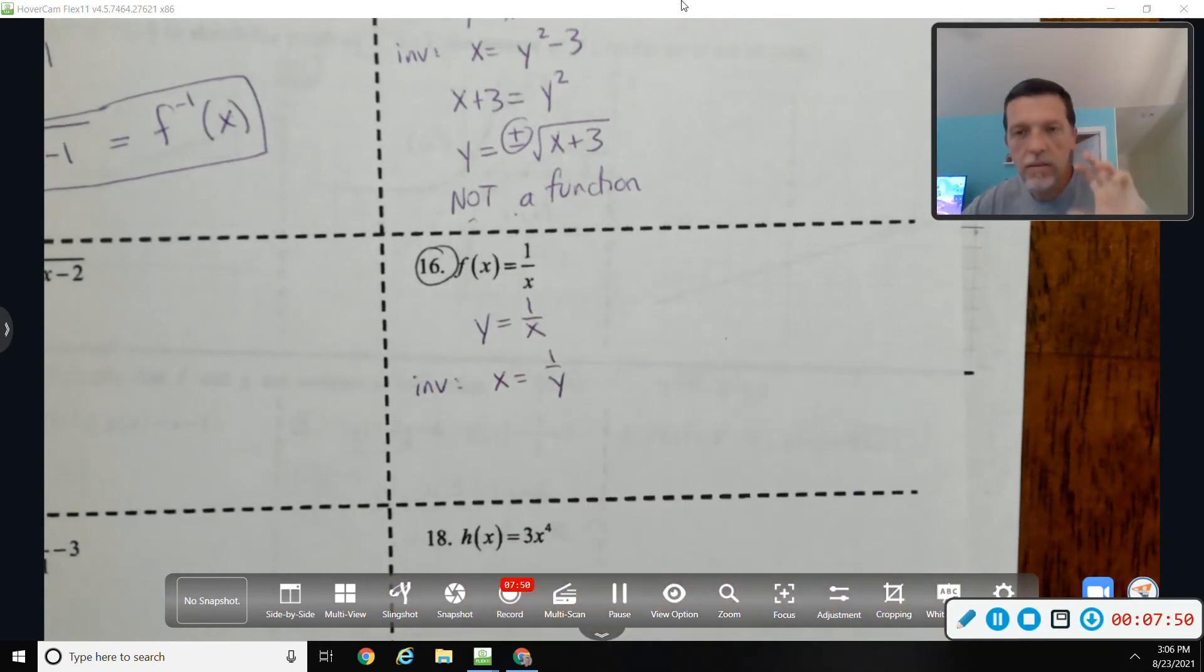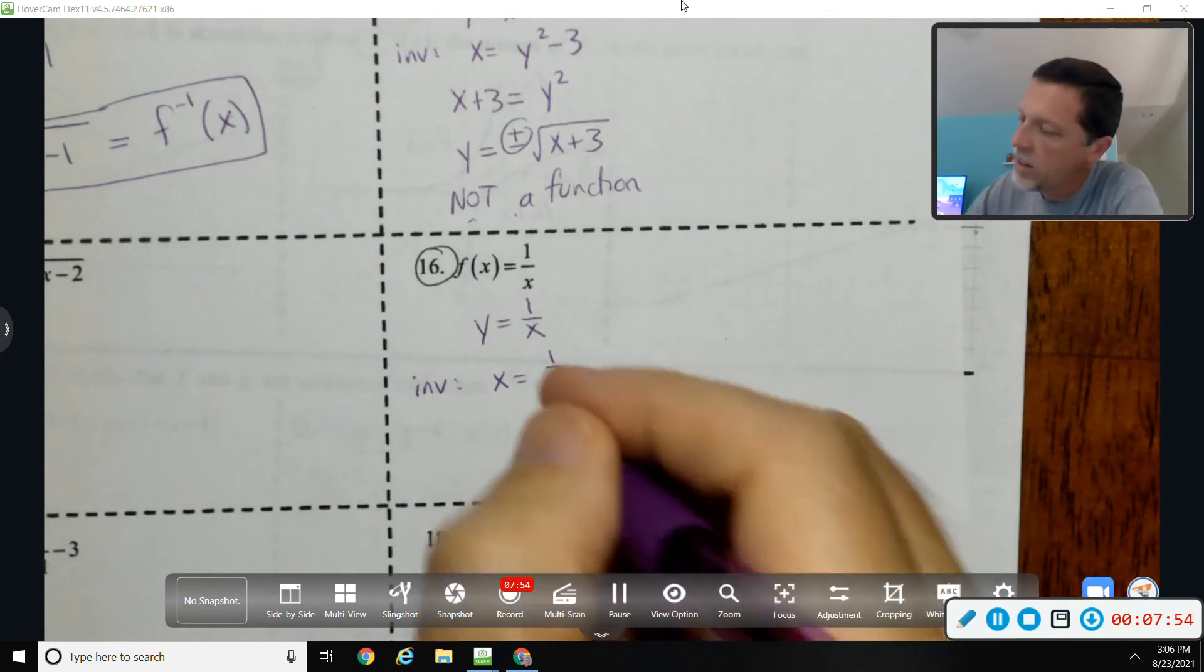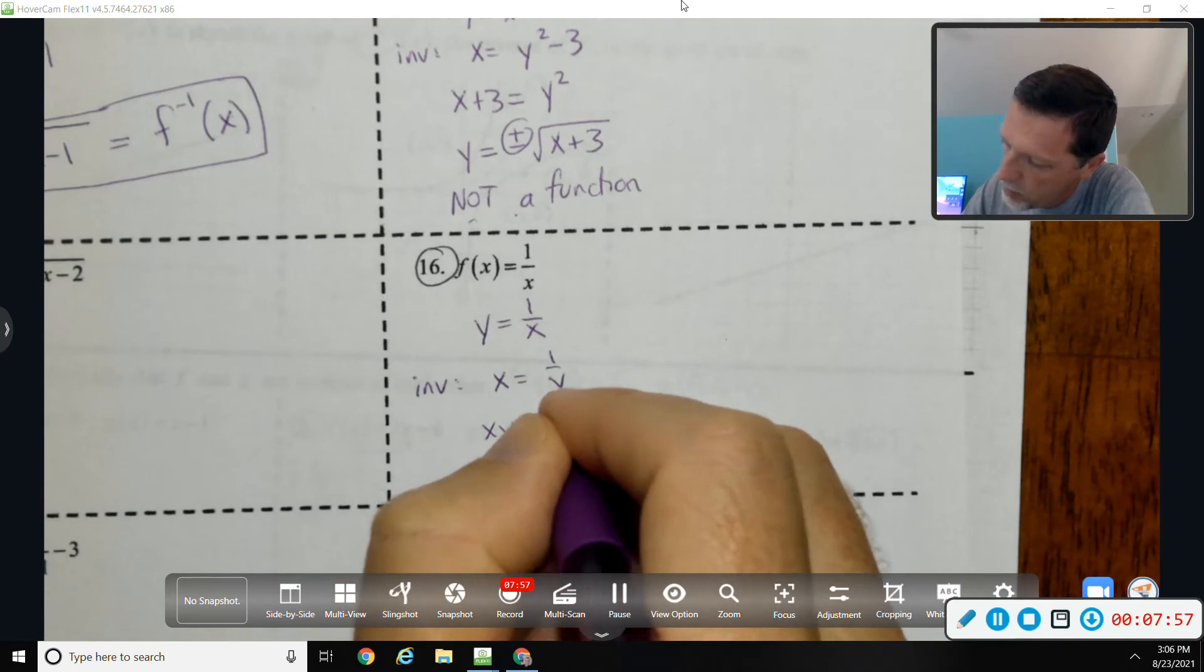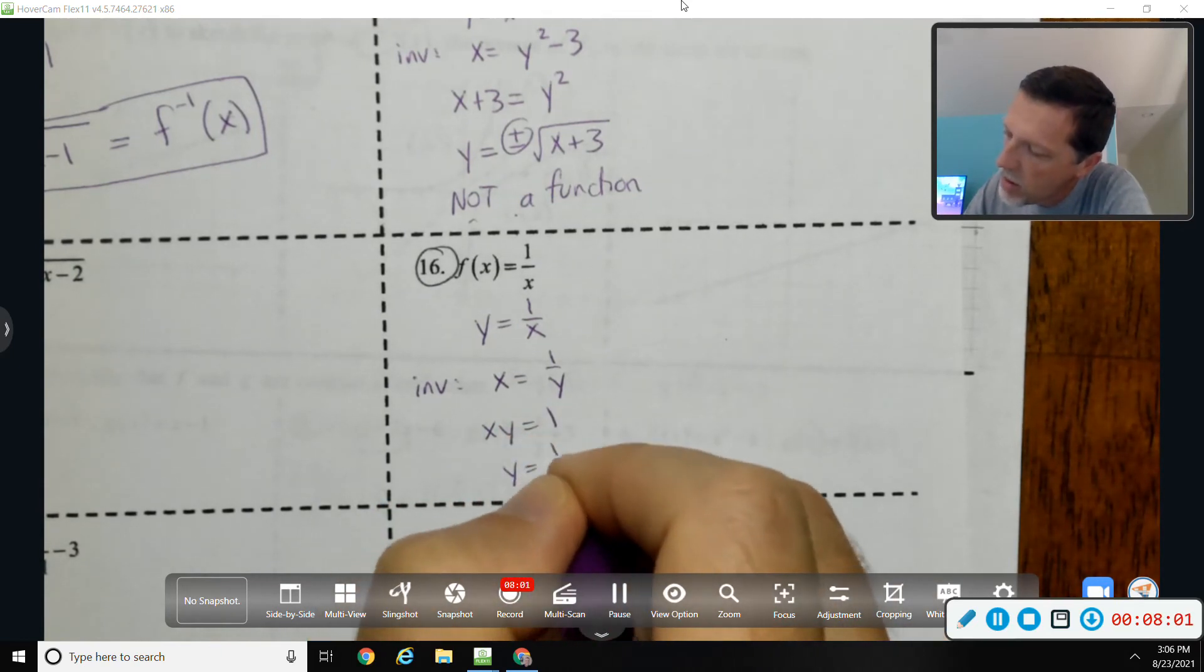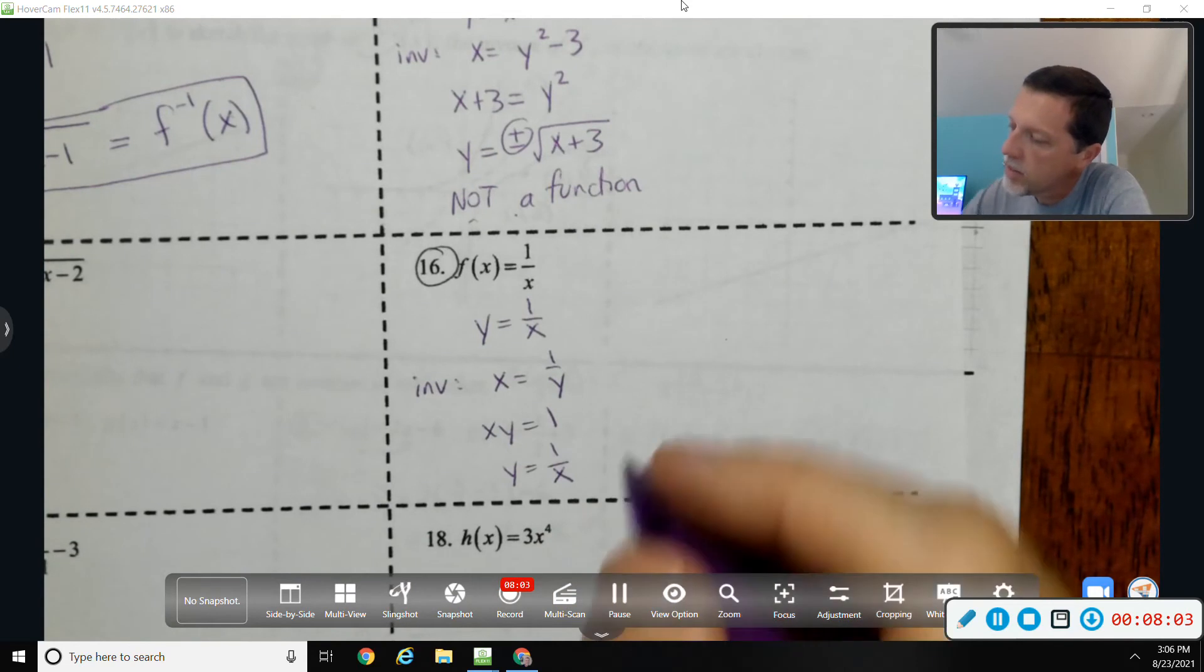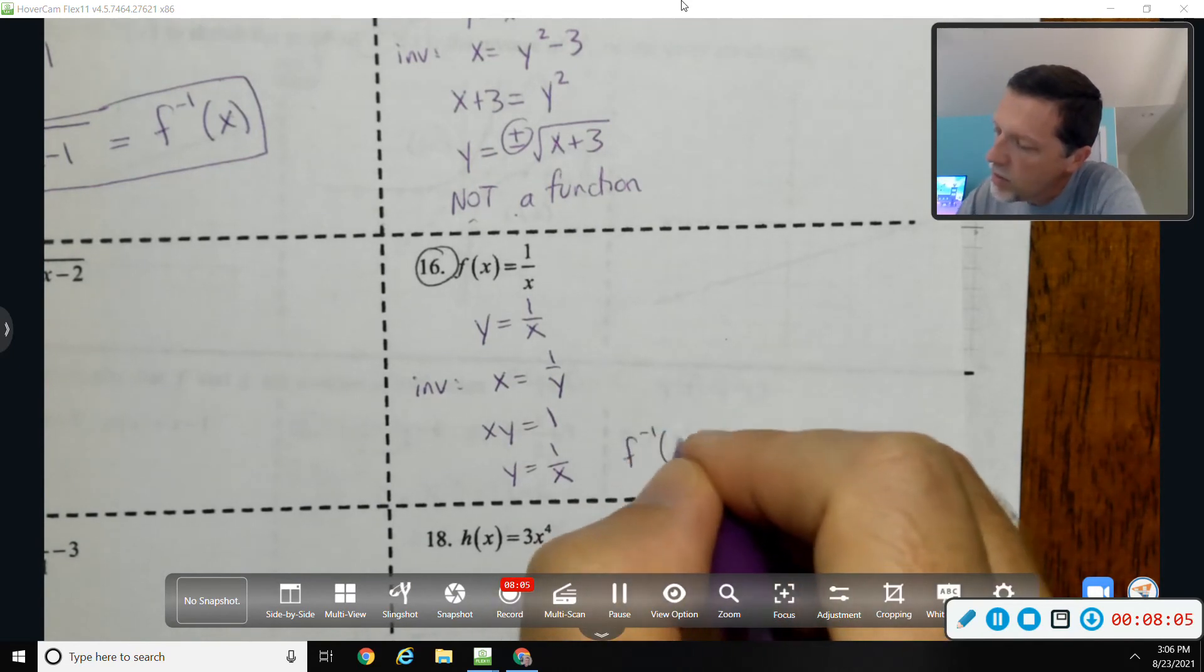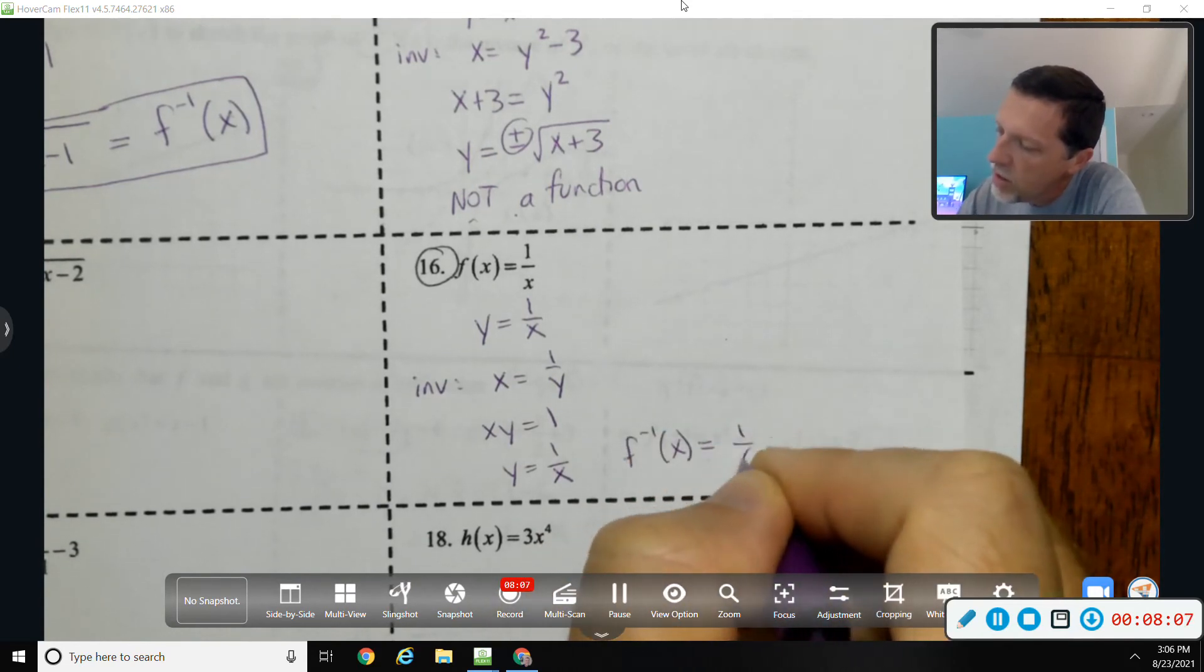So a couple things you could do algebraically. You could flip both sides, so you could write this as x over 1 and flip both sides completely. If that bothers you, you don't like that, you could multiply both sides by y and then divide both sides by x, and get y equals 1 over x. Which means the inverse function is 1 over x.